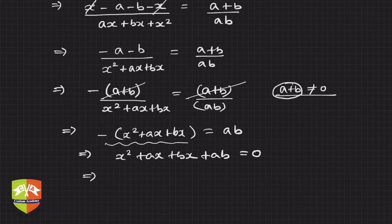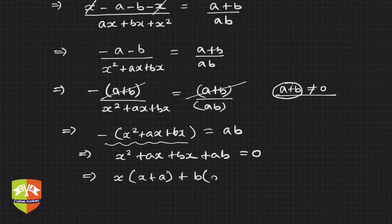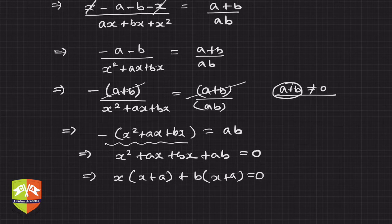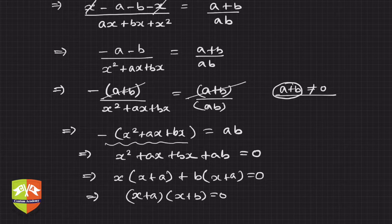There are four terms and we can see common factors, so let's group them: x(x + a) + b(x + a) = 0. This factors to (x + a)(x + b) = 0.